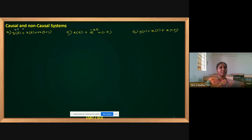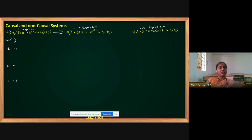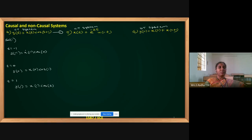The next set includes two continuous time systems (t is present) and one discrete time system (n is present). For the first one, take t = -1, 0, and +1. Rewriting: y[-1] = x[-1]·cos(0), y[0] = x[0]·cos(1), and y[1] = x[1]·cos(2). Here the complete RHS involves t — both x(t) and cos(t+1).